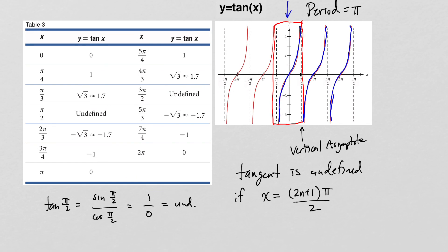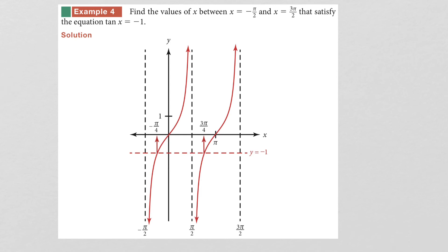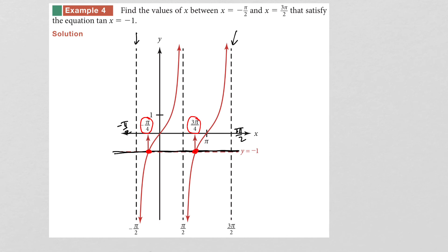The next example: find the values of x between negative pi/2 and positive 3 pi/2 that satisfy tangent of x equals negative 1. Looking at the tangent graph between those two asymptotes, we have two cycles of tangent. Drawing a horizontal line at y equals negative 1, it hits the tangent function at two spots: x equals negative pi over 4 and x equals 3 pi over 4.